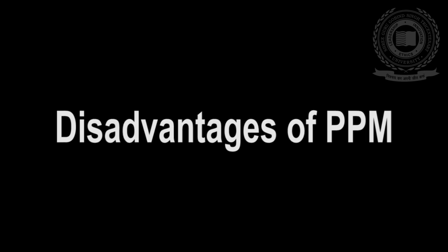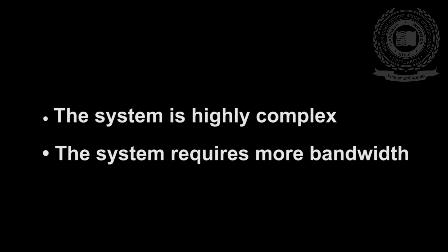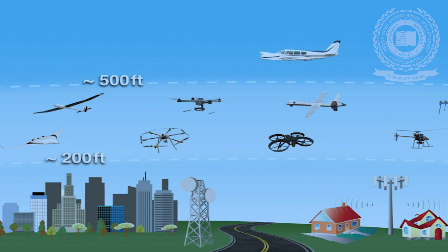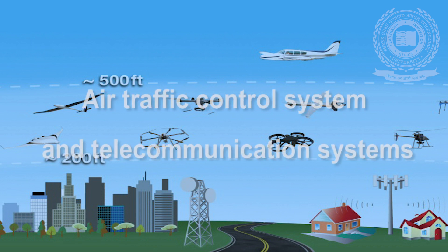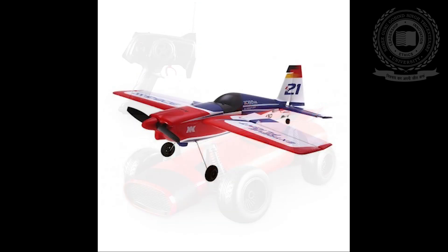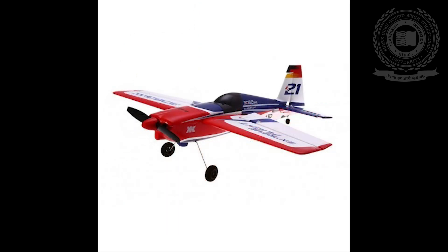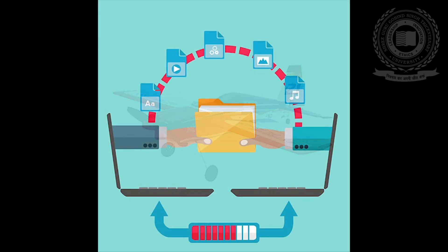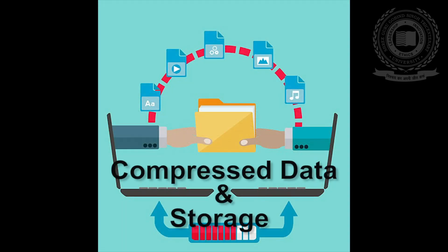Disadvantages of pulse position modulation: first, the system is highly complex; second, the system requires more bandwidth. Applications of pulse position modulation: first, it is used in air traffic control systems and telecommunication systems; second, remote controlled cars, planes, and trains use pulse position modulation; third, it is used to compress data and hence is used for storage.